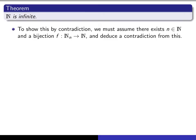How would we do that? We have to prove that it is impossible for any natural number n to have the same cardinality as capital ℕ. So if we're going to show it by contradiction, we should assume that there exists a natural number n and a bijection from ℕₙ to ℕ, and presumably that should lead to a contradiction.